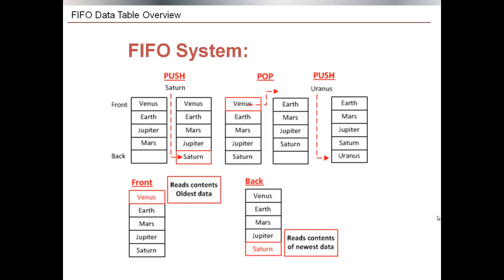Using the FIFO system, which stands for first in first out, the push command writes new information to the back or bottom of a data table. All these rows are then shifted up by one as long as there is space. This is shown in the diagram on the page. When the push operation is performed, there is space in the back row and the word Saturn is written to the back row of the table.